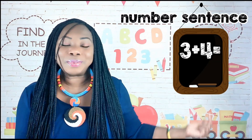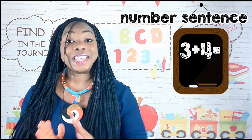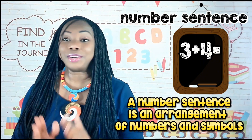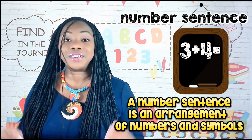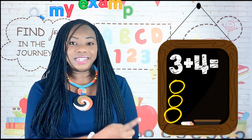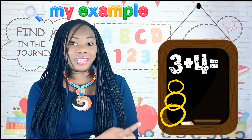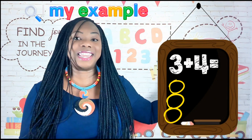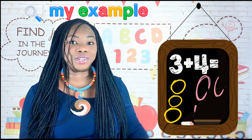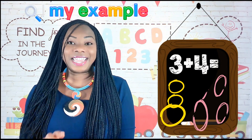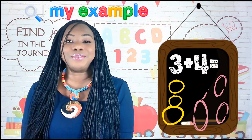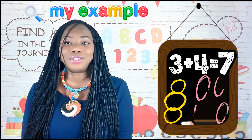This is a number sentence. A number sentence is simply an arrangement of numbers and symbols. For example, I draw three circles, then four circles, and then count all the circles to find the total.